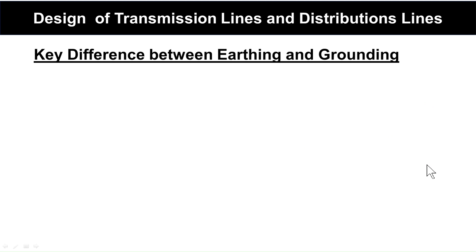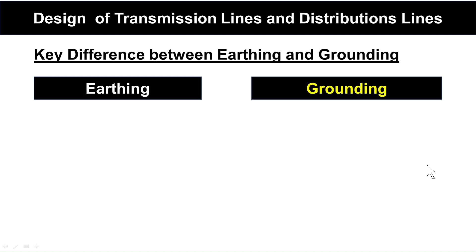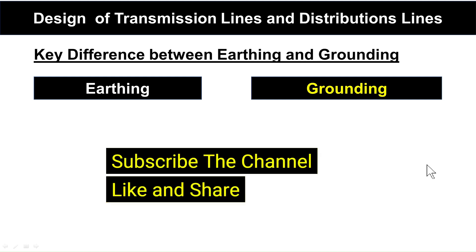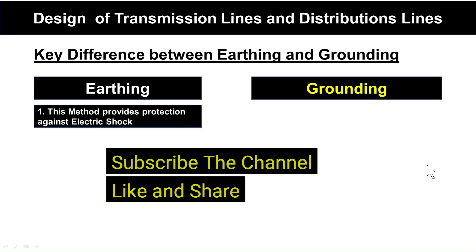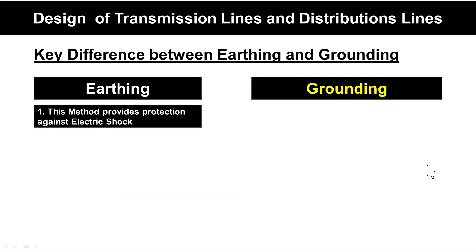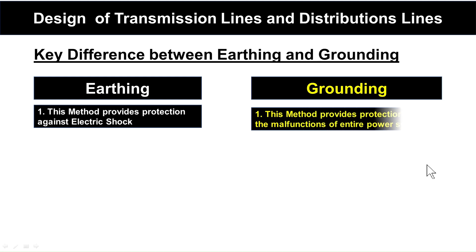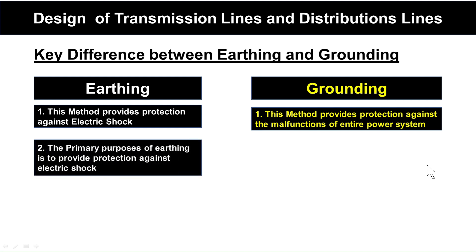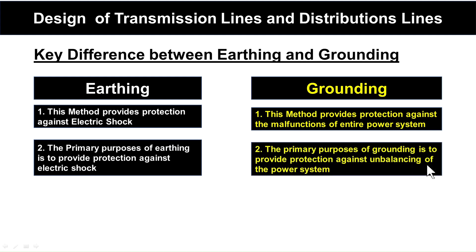Key differences between earthing and grounding: First, earthing provides protection against electric shock, while grounding provides protection against malfunction of the entire power system. Second, the primary purpose of earthing is to protect humans against electrical shock, while the primary purpose of grounding is to provide protection against unbalancing of the power system.